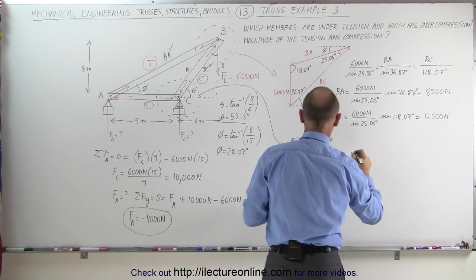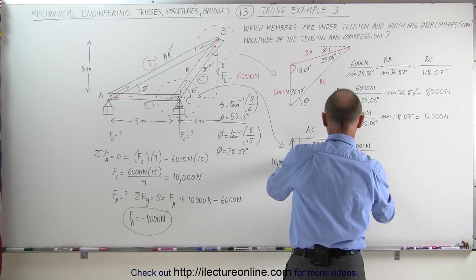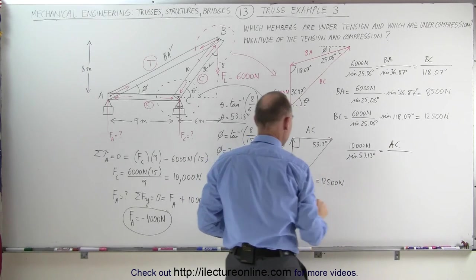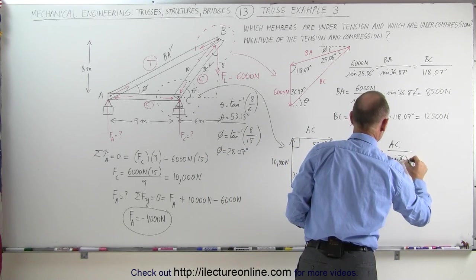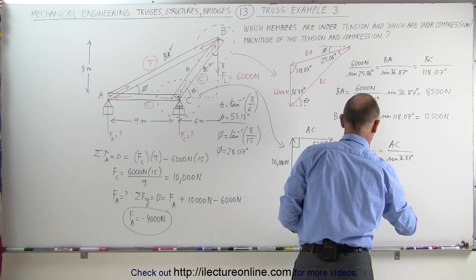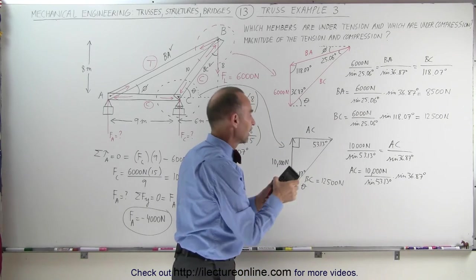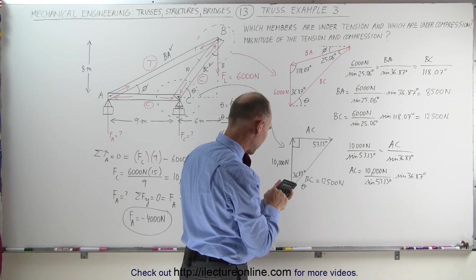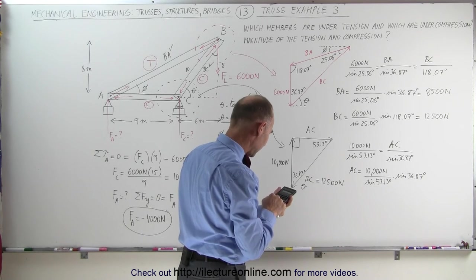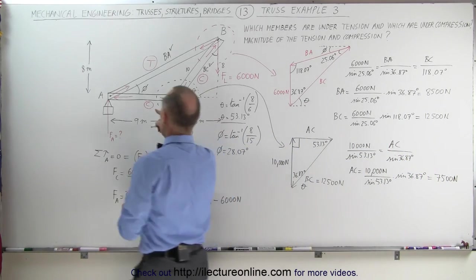We want to find AC. Using the law of sines: 10,000 Newtons divided by the sine of 53.13 degrees equals AC divided by the sine of 36.87 degrees. AC equals 10,000 divided by sine of 53.13 degrees, times the sine of 36.87 degrees, which gives us 7,500 Newtons on that member. We've now found the force on AC.